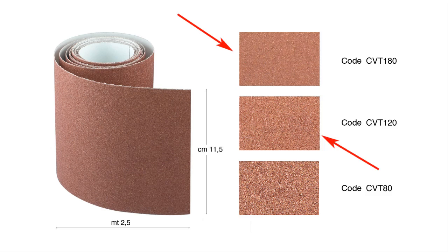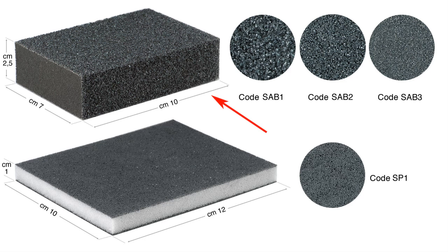An abrasive sponge with three different grain sizes. The thinner and more flexible sponge is suitable for frames with a rounded shape.